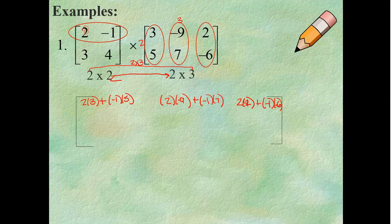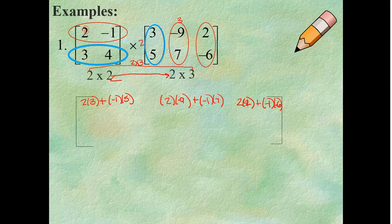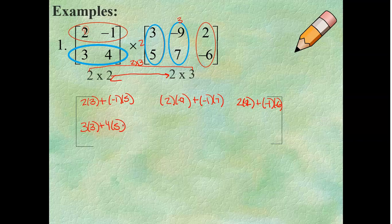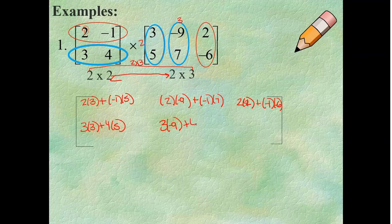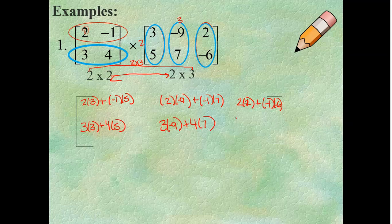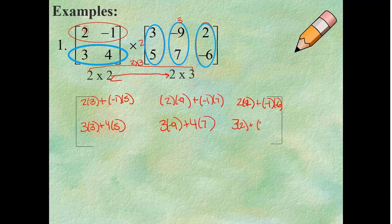Alright. I have finished the first row of my matrix. Now, we need to go to the second row. So, we need to do the exact same thing again. So, we've got to go second row times first column. So, that is going to give me 3 times 3 plus 4 times 5. We have second column with second row. So, 3 times negative 9 plus 4 times 7. Now, I've got to go third column. So, that is 3 times 2 plus 4 times negative 6.